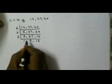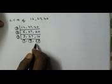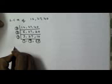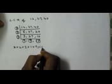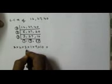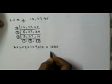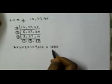Now we multiply all the divisors and remaining values: 2 × 2 × 2 × 3 × 1 × 9 × 10. That gives 1080. So the LCM of 12, 27, and 40 using the division method is also 1080.